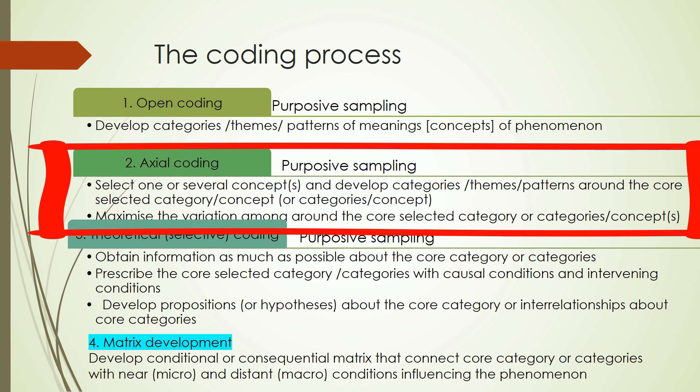The second stage is to take the emerging core concepts from the data and then focus on data collection to understand those concepts or categories that emerged from the analyzed data. This second stage is called axial coding.